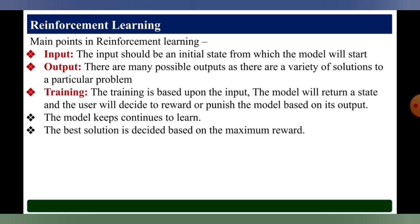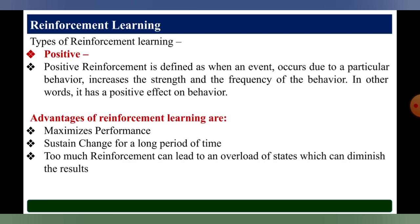The decision is based on the maximum reward. Now coming to the types of reinforcement learning. The first type is positive reinforcement learning, which is defined as when an event occurs due to a particular behavior, it increases in strength and frequency — in other words, it has a positive effect on behavior.